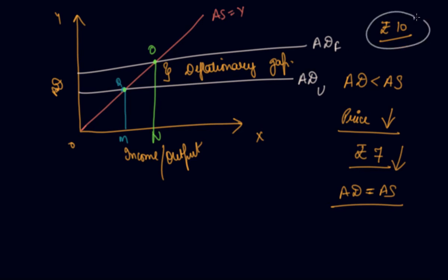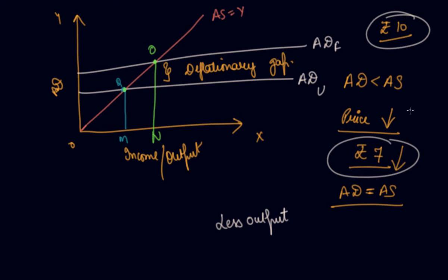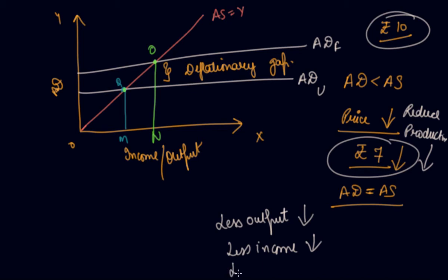But your actual price should be rupees 10; you are selling at rupees 5 just to clear your stock. If you are not reducing prices, then in the next production cycle you will reduce output due to low demand. Less output means less income in the economy and less employment — you are employing less labour, leading to less income overall.